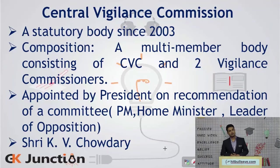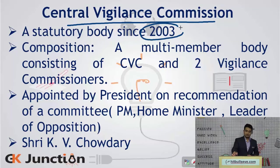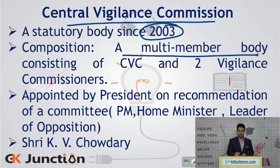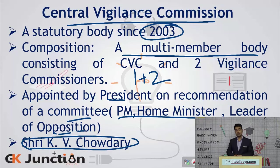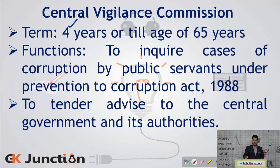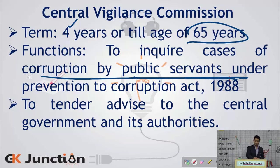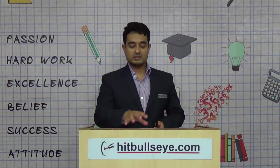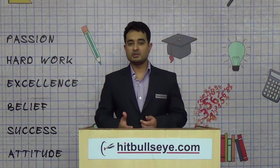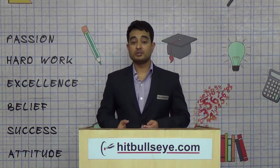The Central Vigilance Commission is another important statutory body, given statutory status with effect from 2003. It is a multi-member body consisting of a Central Vigilance Commissioner and two Vigilance Commissioners, appointed by the President on the recommendation of a committee consisting of the Prime Minister, the Home Minister and the Leader of Opposition. The present Chief Vigilance Commissioner is Shri K.V. Chaudhary. The term is four years or until the age of 65 years. Its functions are to inquire into cases of corruption by public servants under the Prevention of Corruption Act 1988 and to tender advice to the central government, creating accountability and responsibility in public offices.